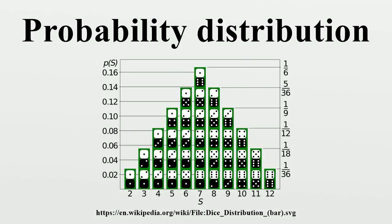In probability and statistics, a probability distribution assigns a probability to each measurable subset of the possible outcomes of a random experiment, survey, or procedure of statistical inference.